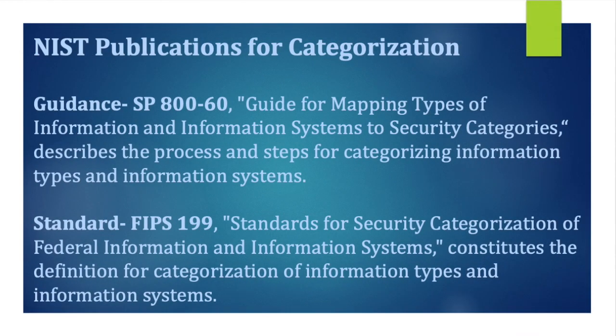What are the NIST publications for categorization? There are two important NIST publications. One is SP 860, which has two volumes — Volume 1 and Volume 2, both in revision 1. SP 860 is the guidance for categorization, meaning it guides the mapping of types of information and information systems to security categories.